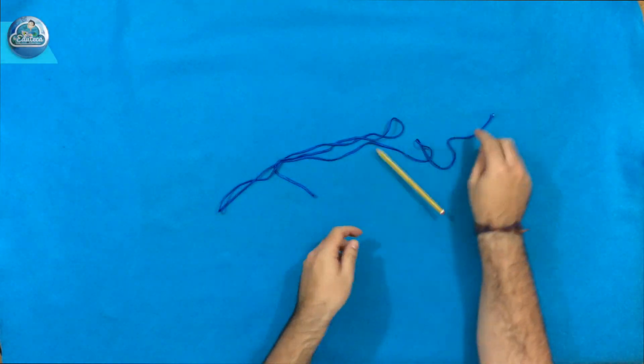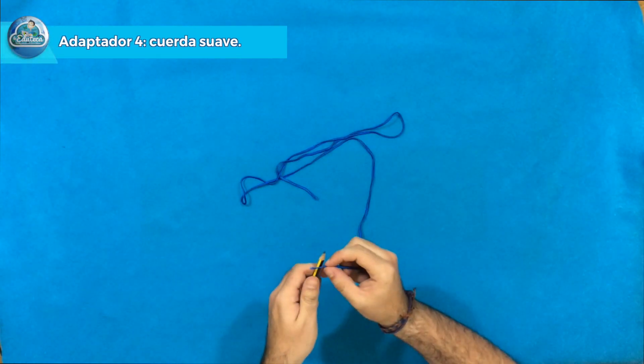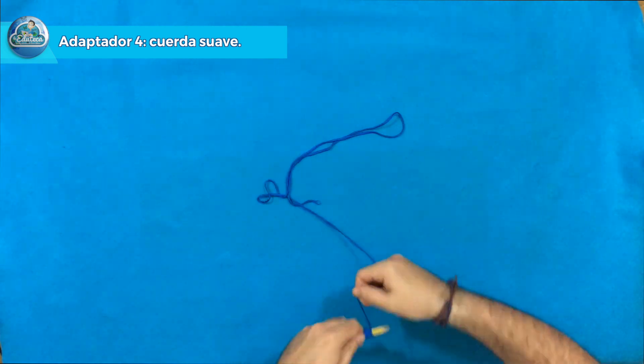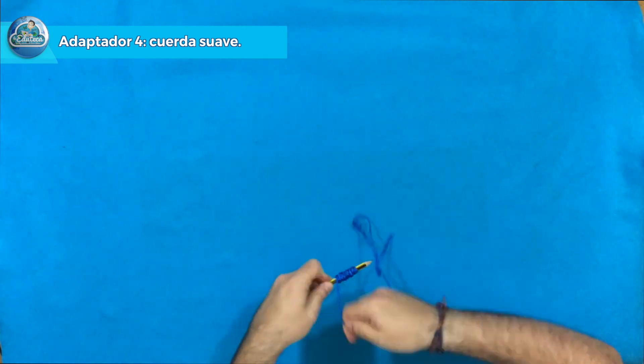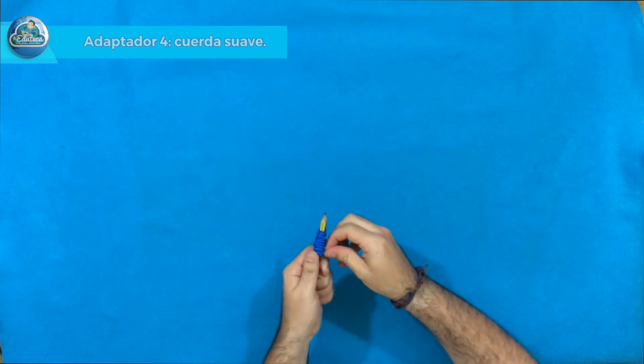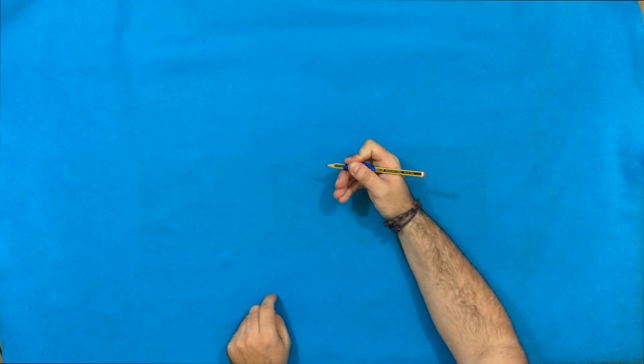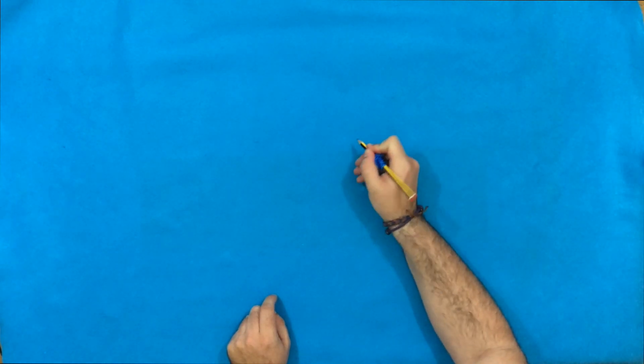El siguiente adaptador es tan sencillo como enrollar una cuerda. Yo os recomiendo que sea una cuerda de tipo suave porque es algo que se va a agarrar de forma continuada. Simplemente se enrolla, le ponéis un poquito de silicona y nos sirve como soporte para agarrar correctamente el lápiz.